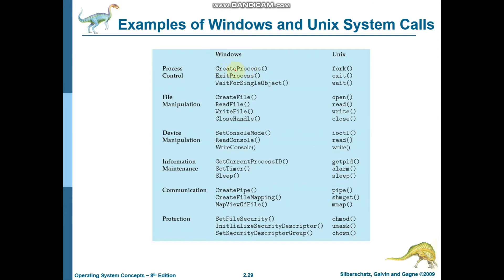You can see which system call commands are used for different types of tasks. This information covers two types: Windows and Unix operating systems. For process control in Windows, you can use CreateProcess, ExitProcess, and WaitForSingleObject. For the same functionality in Unix, you use fork, exit, and wait. These commands are important from the point of view of MCQs. Similarly, there are corresponding commands for file manipulation in both operating systems. You can pause the video and write these down for remembrance.